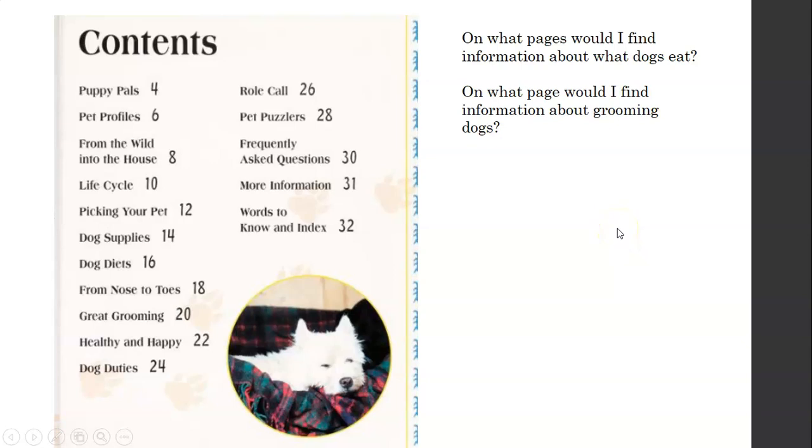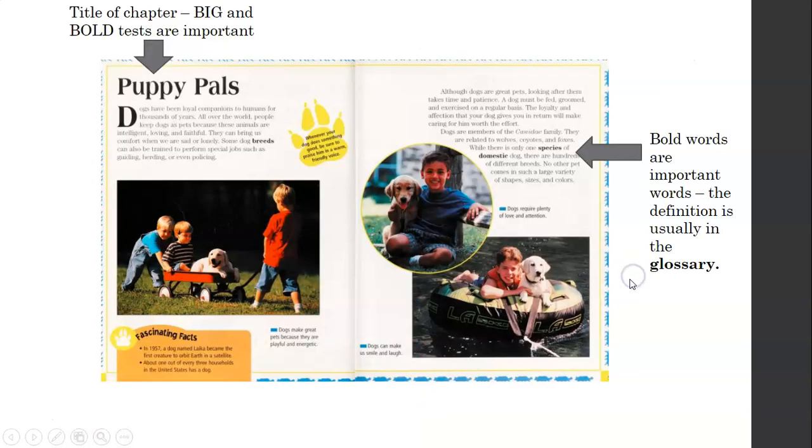You would find that on page 16. If you said page 16, you are right because this says dog diets. That's what dogs eat. Diet is food, things an animal eats. Here we go. Next question. On what page would you find information about grooming dogs? Grooming means taking care of their fur. And they're cleaning them, making sure they're clean. Grooming dogs. What page? If you said page 20, you would be right. Great grooming. That's how you find out about grooming dogs. And that dog looks well-groomed. He looks really happy about being groomed.